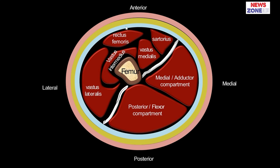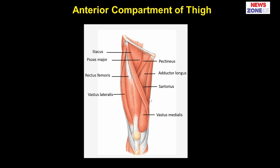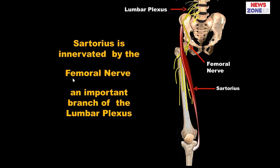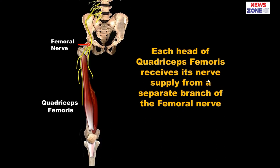We can see how the anterior compartment muscles are arranged. In this picture we can see sartorius, pectineus, rectus femoris, vastus medialis, vastus lateralis, and behind the rectus femoris the vastus intermedius. Regarding nerve supply, all the muscles of the anterior compartment of the thigh are supplied by the femoral nerve, an important branch of the lumbar plexus. The femoral nerve descends below the inguinal ligament and gives supply to all the muscles of the quadriceps femoris.